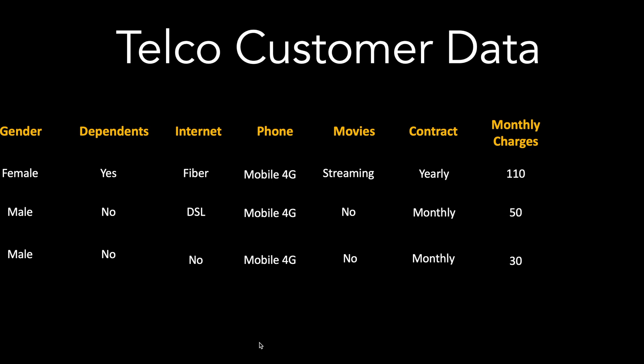In this video we will take data related to customers for a telecommunication company. This dataset has customer information such as demographics, what kind of services the customer has, as well as billing information — about 40 plus columns. We'll assume that we make three clusters, and the result is that each customer is assigned cluster number one, two, or three. Now let us understand what these clusters mean.